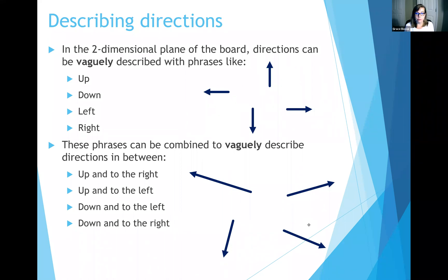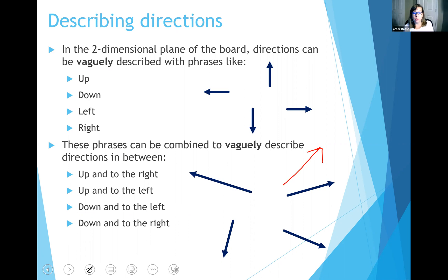You'll notice that these ways of describing arrows are pretty general. I could easily draw two different arrows that are both pointing up and to the right, so it's just not very specific. We want to give specific directions about how these vectors are pointing — it's not good enough to just say 'up and to the right.' We really need some numbers to quantify how these things are pointing.